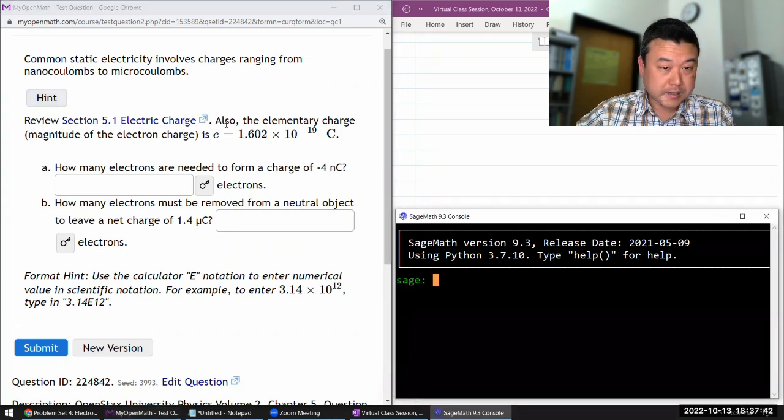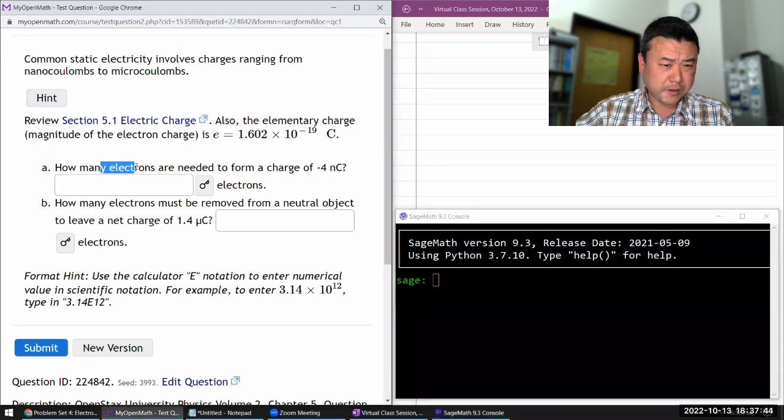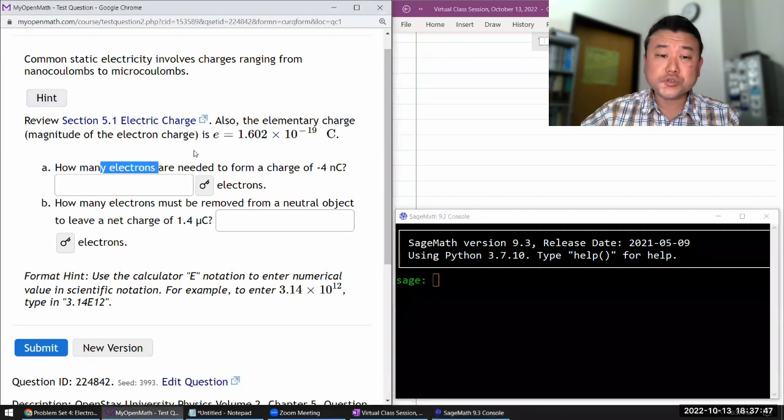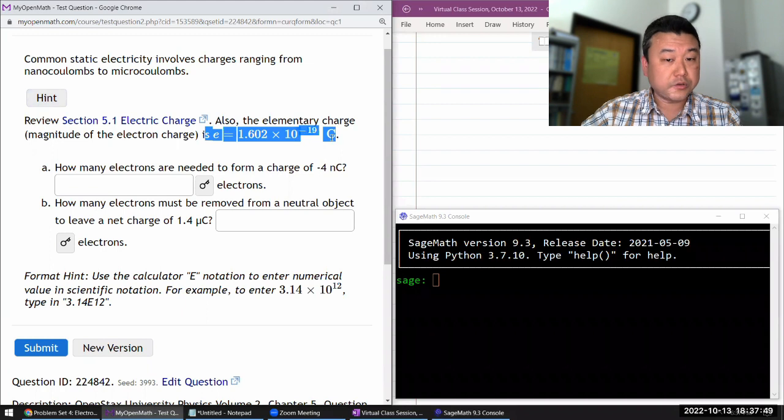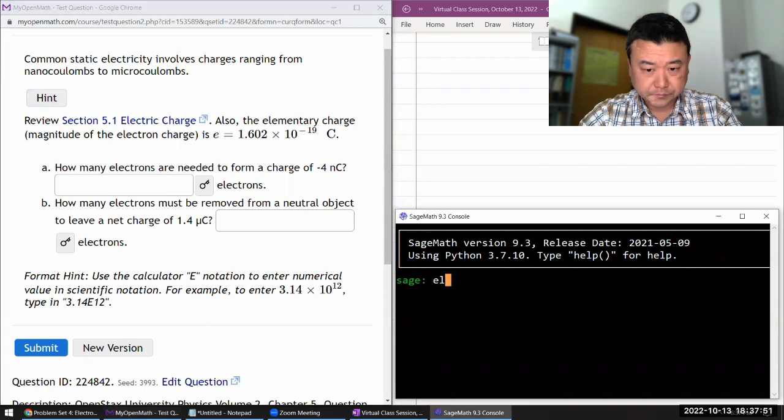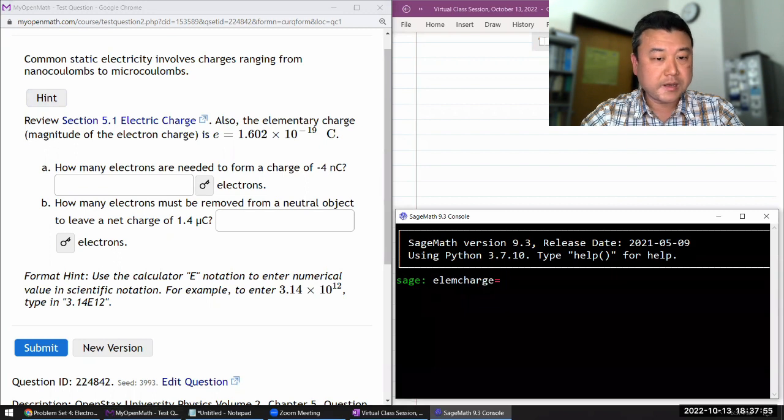So it says we are going to talk about electrons. It's good to have electron charge. Let me just define elementary charge as 1.602 times 10 to the power of minus 19.